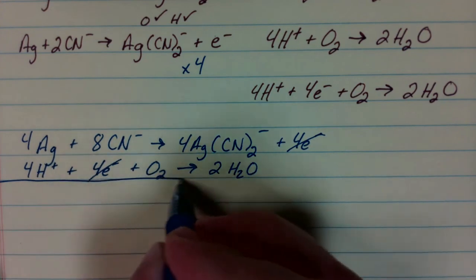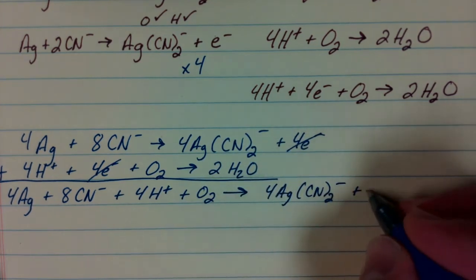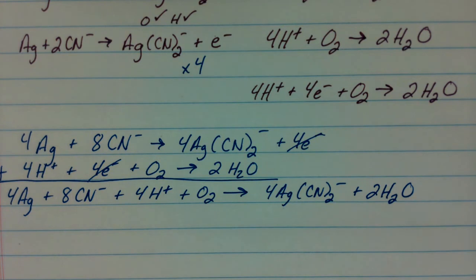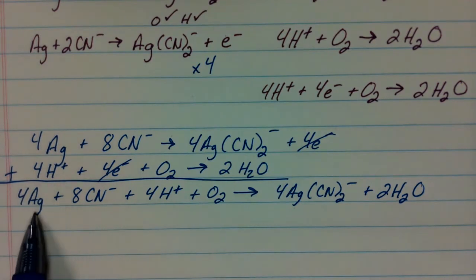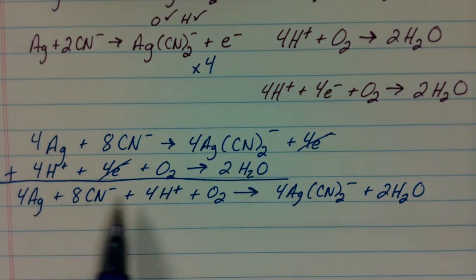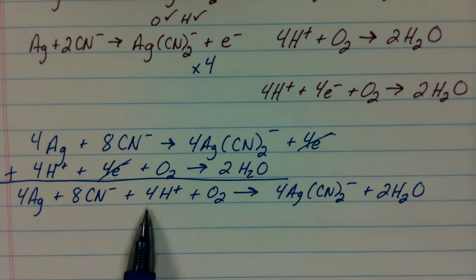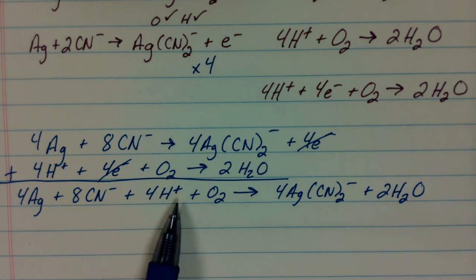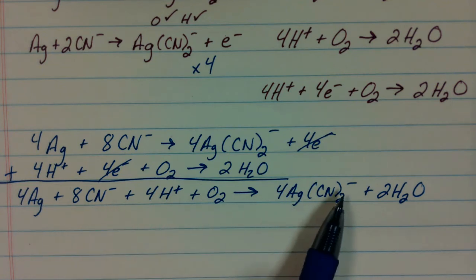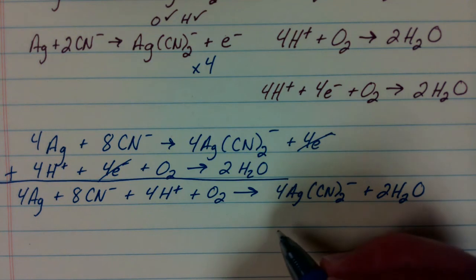We cancel the 4 electrons from each side and add the half-reactions together. If this reaction were in acidic solution, this would be a balanced redox reaction. We have 4 silvers on each side, 8 cyanides on each side, 8 carbons, 8 nitrogens, 4 hydrogens on each side, and 2 oxygens on each side. Charge-wise, negative 8 plus positive 4 gives negative 4 on the left, and 4 times negative 1 is also negative 4 on the right. But this reaction takes place in basic solution, not acidic solution.